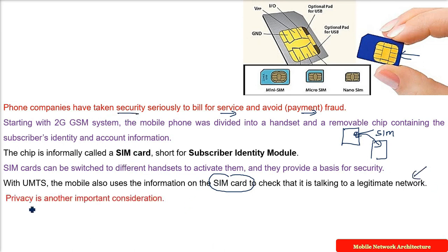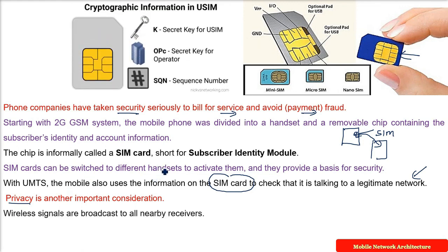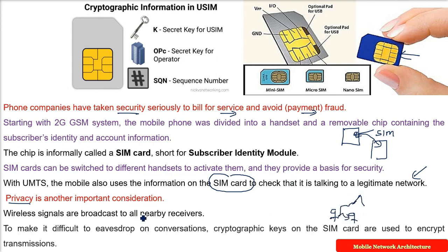Along with security, there is another important consideration in mobile cellular networks: privacy. In wireless communication, you are broadcasting to everyone, and someone may eavesdrop and catch your signal or conversation. To make eavesdropping difficult, there are cryptographic keys on the SIM card, which are used to encrypt the transmission. This is how privacy is ensured.